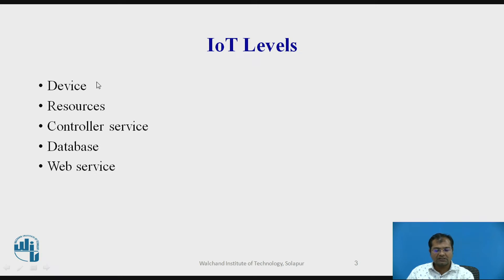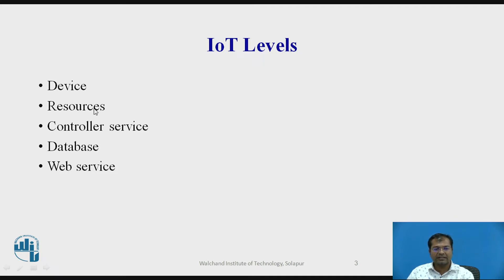The first term is the device. A device is used for identification, which is going to sense the data through remote sensing and actuators, and for monitoring of parameters like temperature, humidity, etc. All these can be monitored with the help of a particular device.